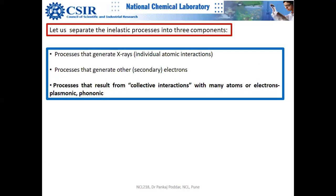What are the signals generated during the inelastic process? There are X-rays from individual atomic interactions — from core electrons being kicked out and then X-rays being emitted. Then you have secondary electrons, which are discussed in scanning electron microscopy. And there are more complex processes resulting from collective interactions, which are actually plasmonic and phononic interactions. To teach those, I would need to teach what a plasmon and phonon are — that's all good for physicists. For a chemistry audience I don't teach them, but if you want to go deeper into electron energy loss spectroscopy, you can't escape physics.